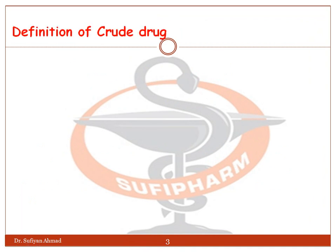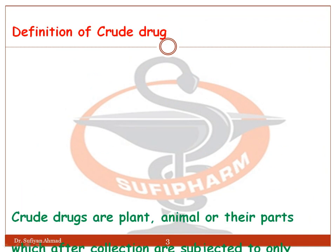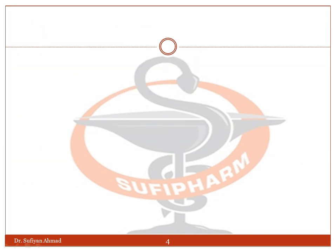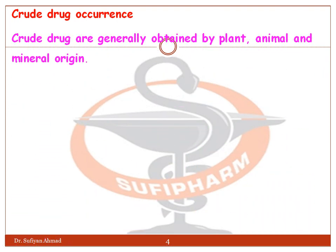First, we will see the definition of crude drug. Crude drugs are the plant, animal, or their parts which after collection are subjected only to drying, or making them into transverse or longitudinal slices, pieces, or peeling them. In some cases, crude drugs are generally obtained from plant, animal, and mineral origin.